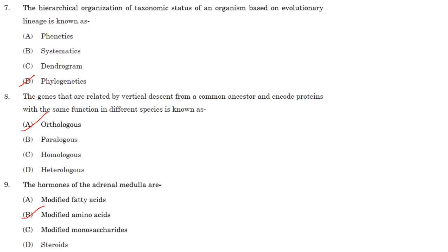Genes that are related by vertical descent from a common ancestor and encode proteins with the same function in different species are known as orthologs — answer is option A. Paralogous genes are genes present in a particular organism related to each other through a gene duplication event. Homologs are genes derived from a common ancestor either due to orthology or paralogy. Heterologous describes when a gene is expressed in a different species than the one it originated in — for example, expressing an Arabidopsis gene in tobacco makes tobacco a heterologous system.